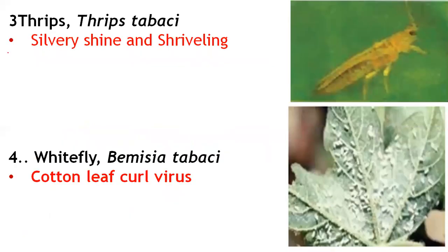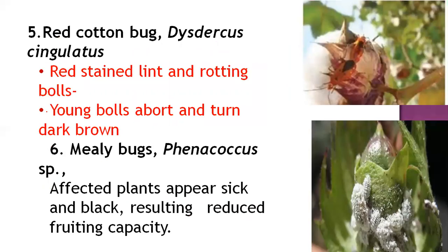Thrips is also a sucking insect; it causes silvery shine and sibling-type symptoms on plants. Whitefly (Bemisia tabaci) in high populations causes leaf curl virus. The red cotton bug attacks during the last stage at picking time, causing red-stained lint, rotting of bolls, and seeds turning dark brown due to infestation.